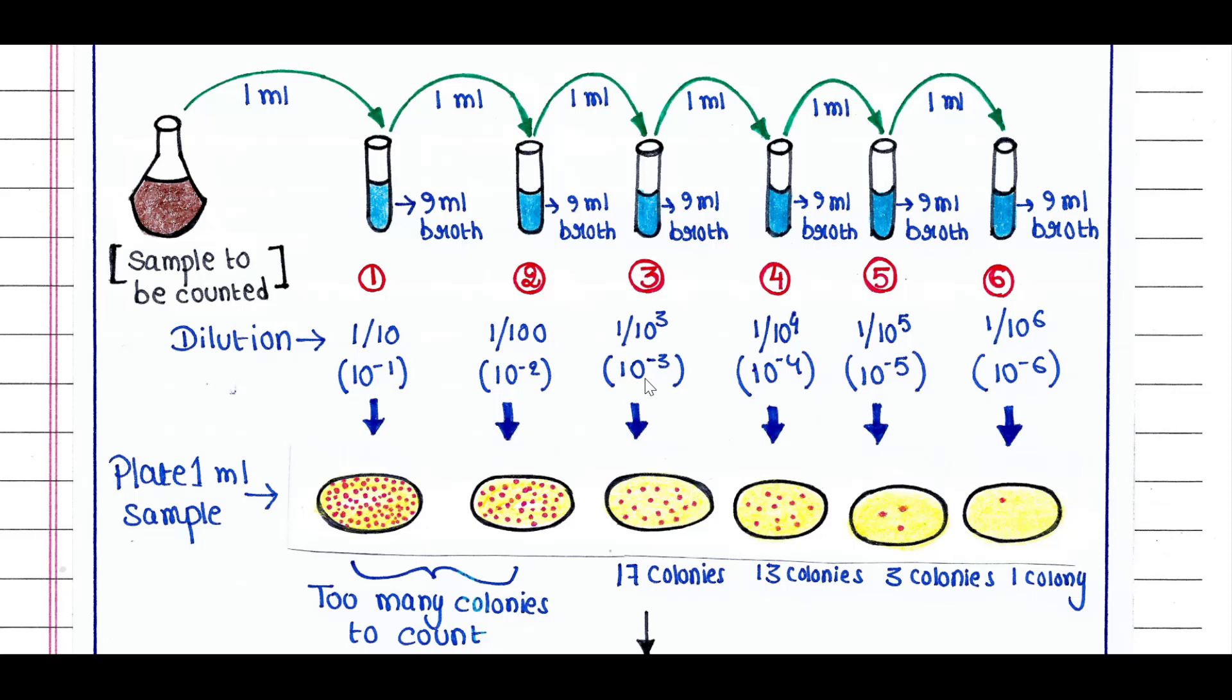Again, we will take 1 ml culture from tube 3 and put it in 9 ml broth in tube 4. That means the dilution is 10 to the power minus 4.